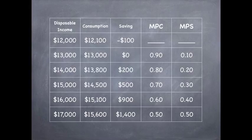Next, we have $16,000 for disposable income, $15,100 for consumption, $900 for savings, a change in consumption of 0.60, and a change in savings of 0.40.